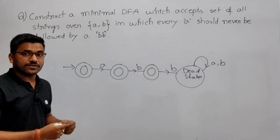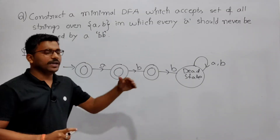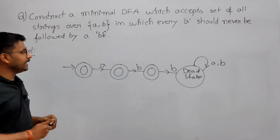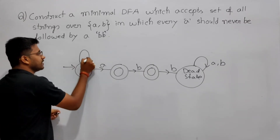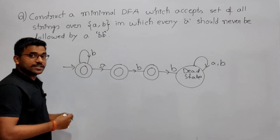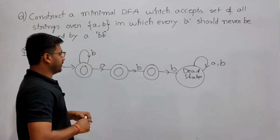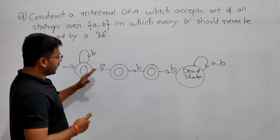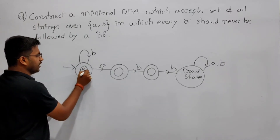Because here I am searching for the pattern 'abb'. Whenever I am getting 'abb', reject it. Now, before getting 'a', I can have any number of b's — b stays in the initial state, because I'm searching for 'abb'. So for b, the transition from state q0 goes back to q0.